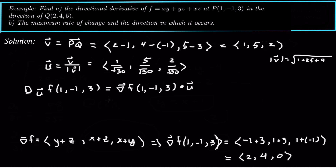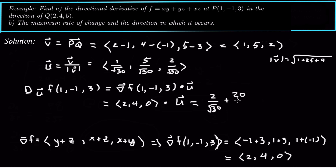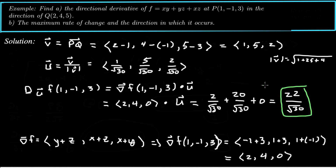The directional derivative is (2, 4, 0) dotted with the unit vector u. Taking the dot product: 2 over √30 plus 20 over √30 plus 0, which reduces to 22 over √30. And that's our directional derivative for part a.